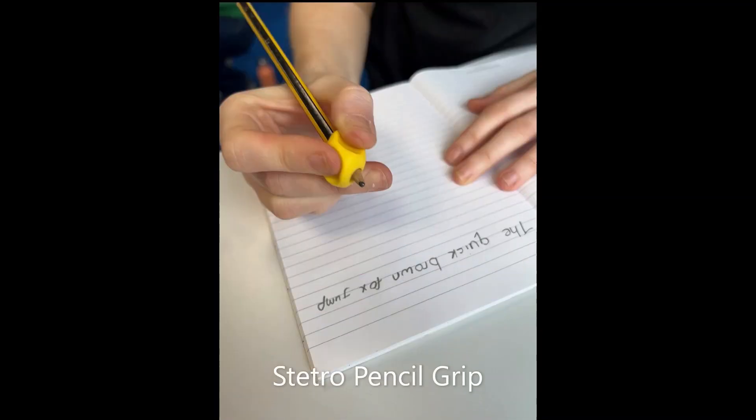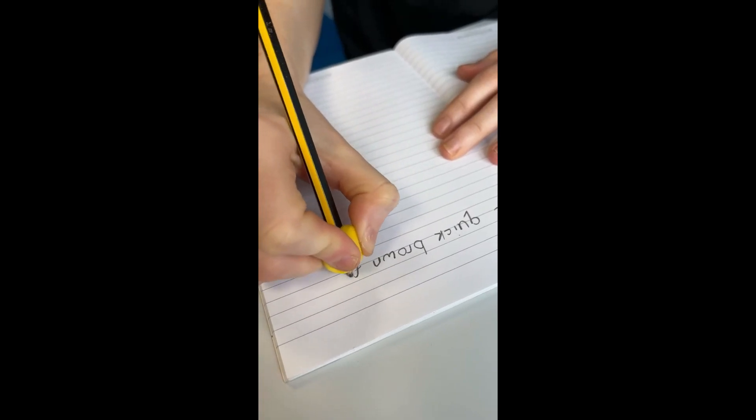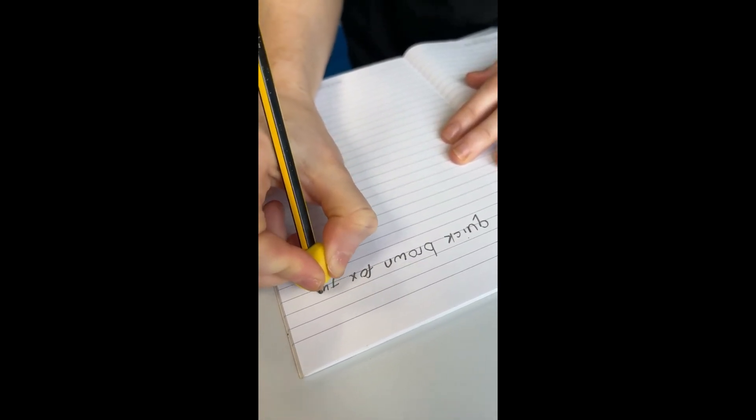The StetroGrip is small and discreet but it can increase comfort when writing. It has a place for each of the fingers and encourages the tripod grasp.